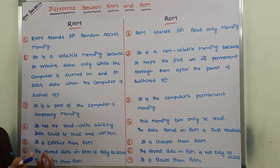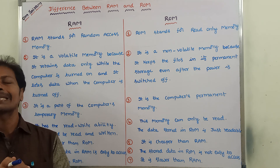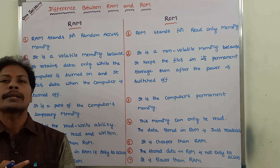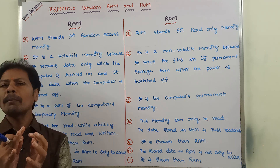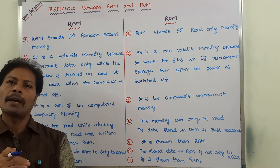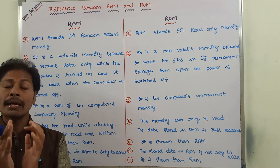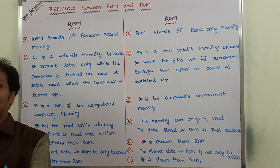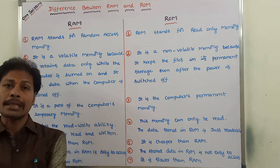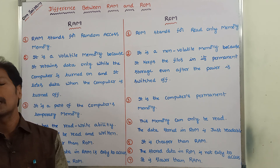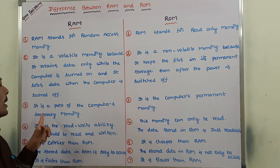Third point: RAM is a part of the computer's Temporary Memory. In a computer system, Temporary Memory and Permanent Memory are available. Temporary Memory is nothing but RAM, and Permanent Memory is nothing but Hard Disk. The data stored in the hard disk is permanent, whereas the data stored in RAM is temporary — it exists while the computer power is on and is lost when power is turned off.